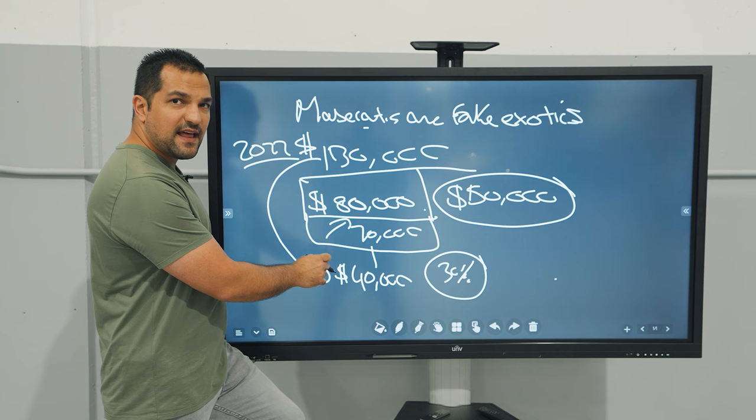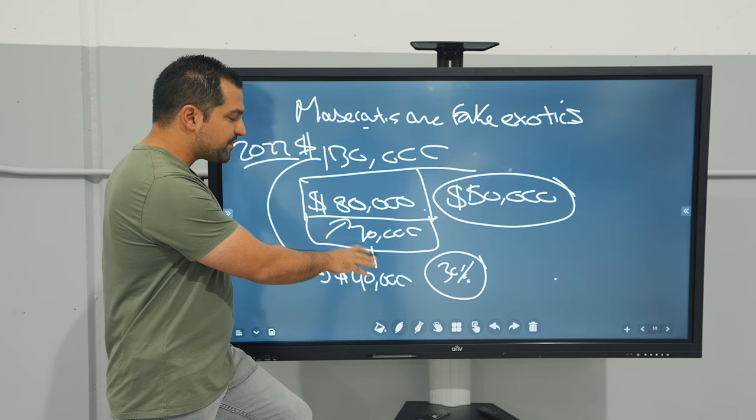What does this tell you? That the dealer network itself that sold you the car for $130,000 doesn't even believe in the value of their own car in the next year and they know that the demand is so small for their crappy product.